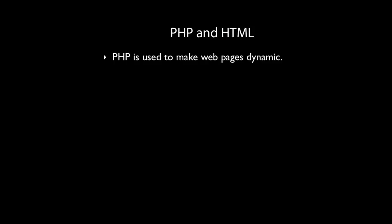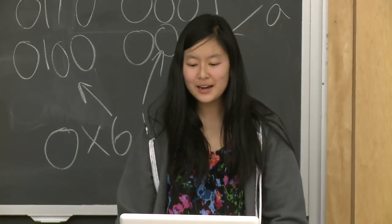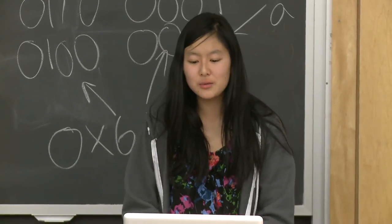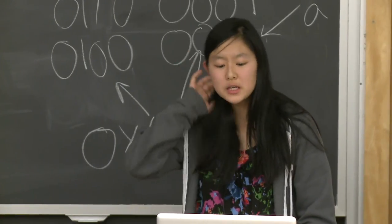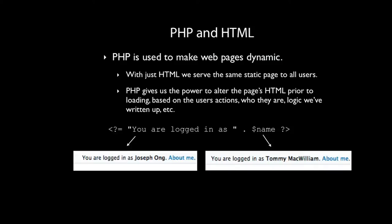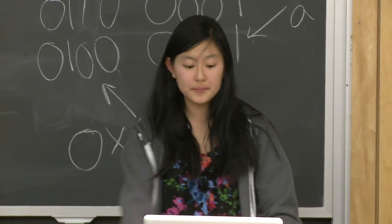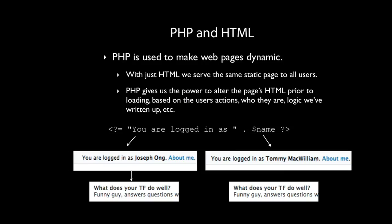PHP is used to make web pages dynamic. With plain HTML you always have the same static content, but with PHP you can change content based on who the user is. For example, a page that says 'You are logged in as [name]' can display different names and different content for Joseph versus Tommy, even though it's technically the same web page being accessed.